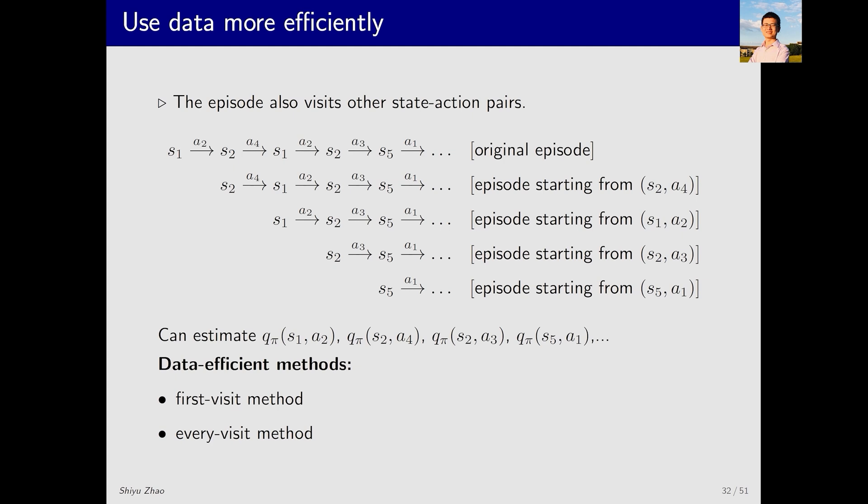Here we have two methods: first-visit and every-visit. There is a slight difference between them. Let's look at this example. Here, it visited S1, A2 the first time and then visited S1, A2 again the third time. What does it mean for the every-visit method?